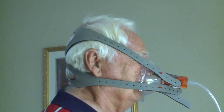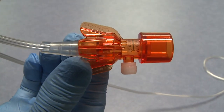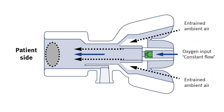The continuous positive airway pressure is created when the vectored flow valve accelerates the oxygen flow, causing turbulence at the restrictor exit. This in turn causes the pressure to drop and allows for ambient air to be entrained into the chamber and mixed with oxygen. By varying the oxygen flow through the vectored flow valve, the baseline pressure can be raised or lowered to maintain a constant airway pressure.